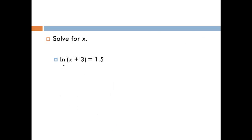Now we have a logarithmic equation: the natural log of the quantity x plus 3 is equal to 1.5. To solve a logarithmic equation, we use the property that if you have log base a of x, and you make that entire logarithm the exponent of base a, everything cancels and you're just left with x. The base of the exponent must match the base of the logarithm.